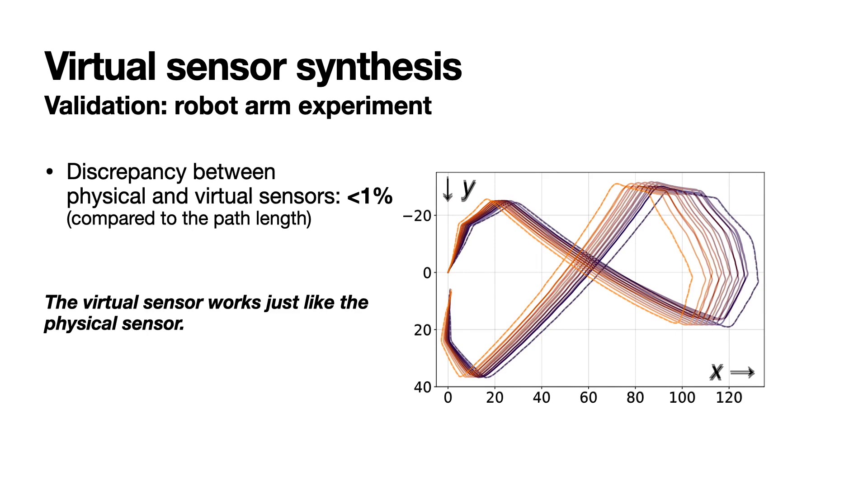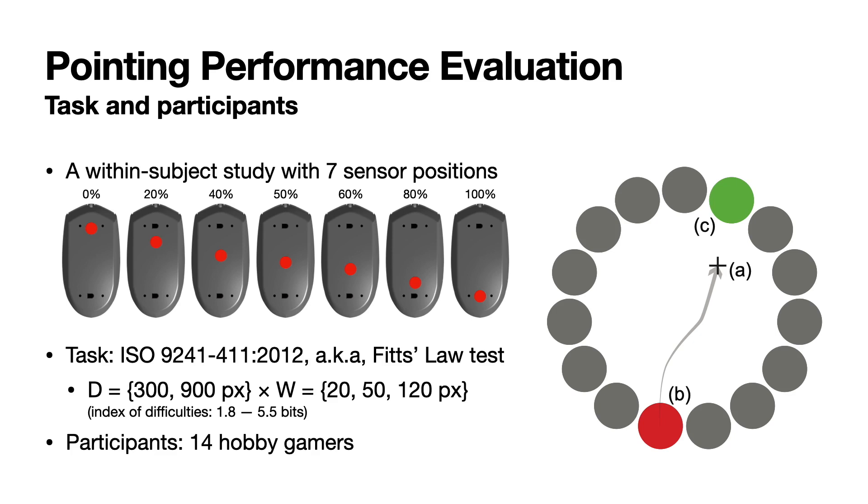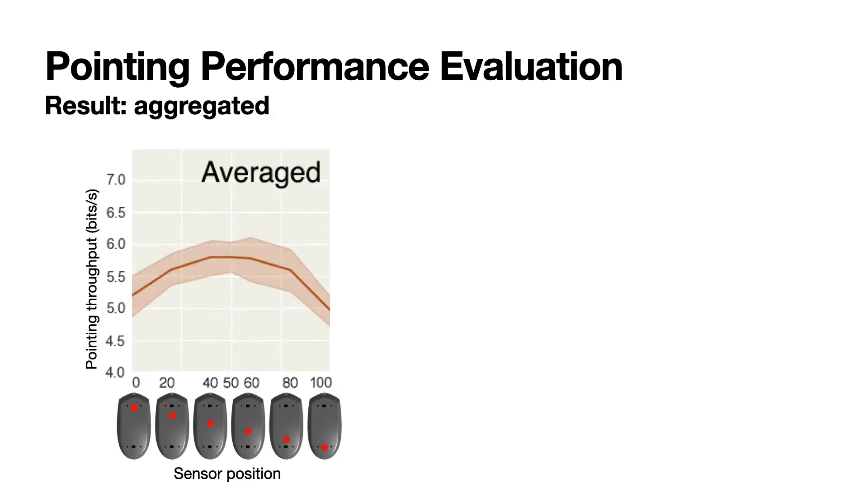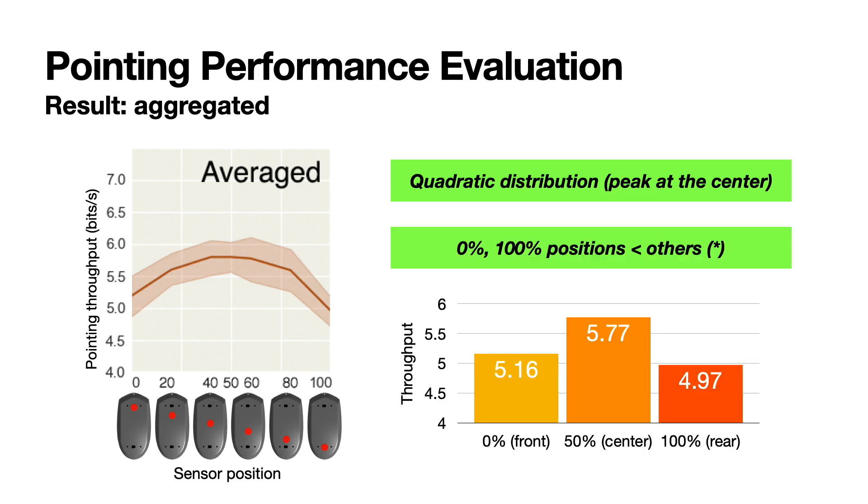So, now it's the time to answer the questions we asked before. The first question was, does the sensor position really matter? To answer that question, we conducted a within-subject user study with different sensor positions. We collected pointing performance using the standard Fitts's law test with 14 participants. The result is shown in the figure. The result is following the quadratic distribution peaked at the center, which means the centered position works best for the participants. The extreme positions, the frontmost and the rearmost, was slower than the center by 10% and 14%.